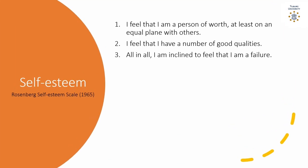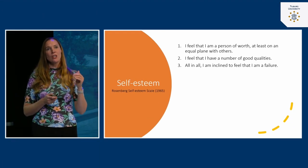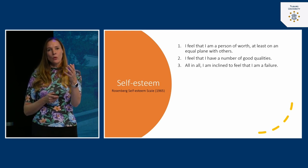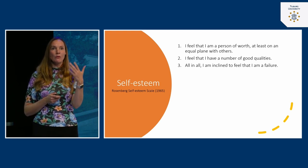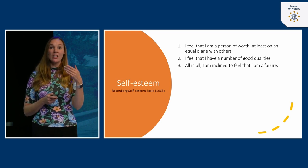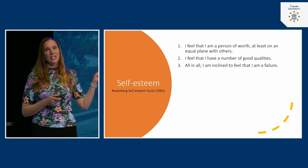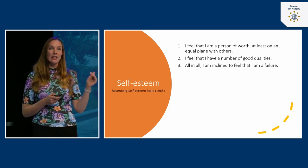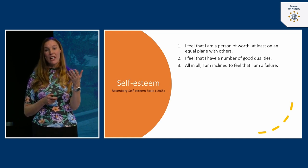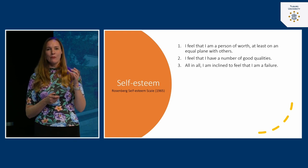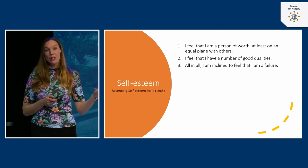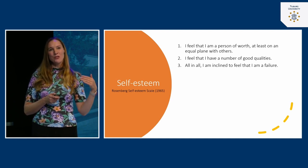Item two: 'I feel that I have a number of good qualities.' Item three: 'All in all, I am inclined to feel that I am a failure.' Something interesting is happening here. In a good questionnaire, the formulation of questions differs. For the first two items, a higher answer — totally agreeing — indicates higher self-esteem. But for item three, a higher score actually means lower self-esteem. These are called reverse-scored items.